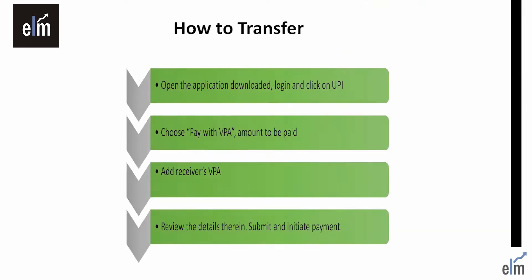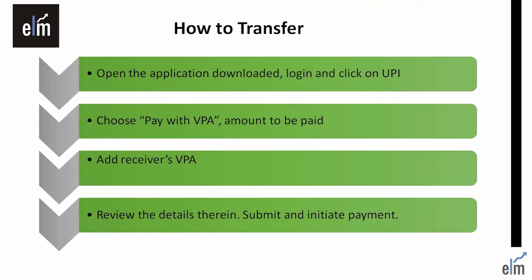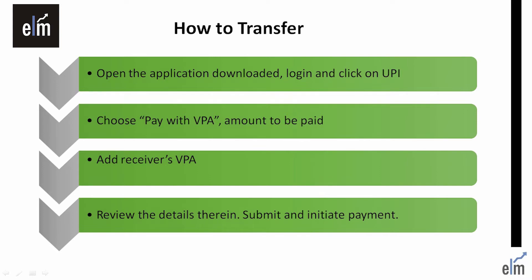How do you transfer money via UPI? The procedure is simple. First, open the application, log in, and click on the option UPI. Under UPI, choose the option 'Pay with VPA'. Enter the amount to be paid and add the receiver's VPA — that is, add the details of the person who will be receiving the money. Review the details, then submit and initiate the payment. In case of any queries, please do write to us at the email ID mentioned herein.